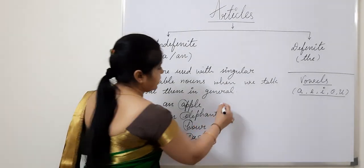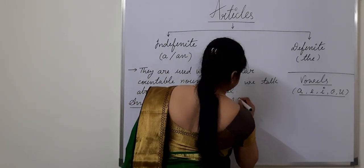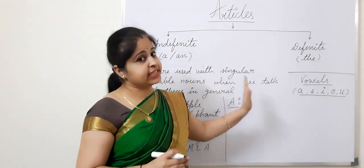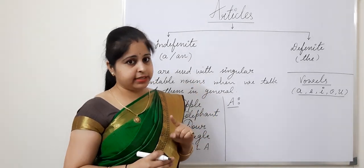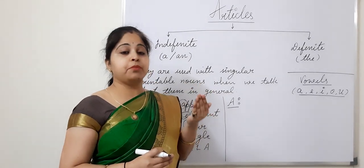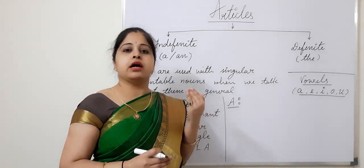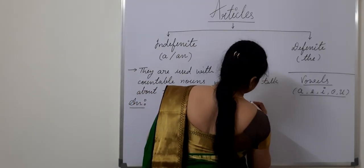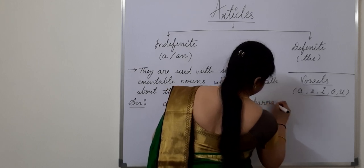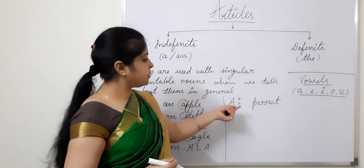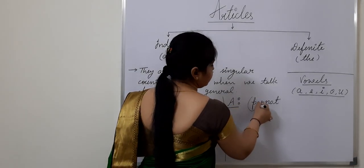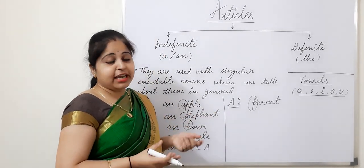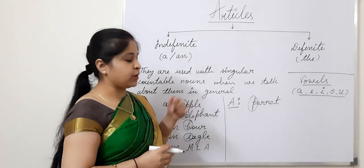Now let's see where to use 'A'. We will be using 'A' before words beginning with consonant sounds — not just consonants, but consonant sounds. First example: 'Parrot'. Parrot is beginning with P, which is a consonant, and when you pronounce this word — Parrot — it has the sound of a consonant.